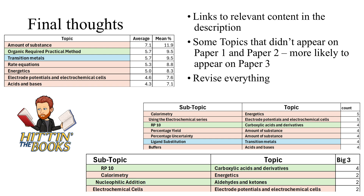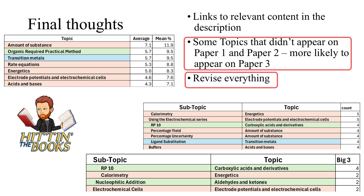Hopefully that's given you some ideas about which topics to prioritise as your paper three exam gets closer. You ought to revise everything, but when you're not too far from the exam it's smart to prioritise particular topics and subtopics because time is limited. It's also worth noting that topics that don't come up on paper one and paper two are more likely to appear on paper three — particularly if the missing topic has a significant practical element, since paper three favours practical work. I'll release a YouTube video about papers one and two after they've both happened on the 18th of June.